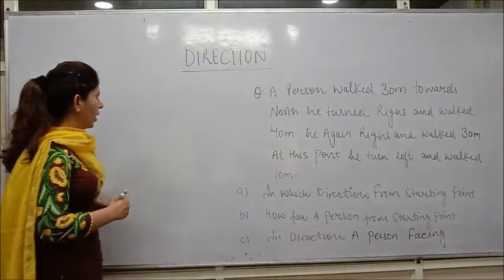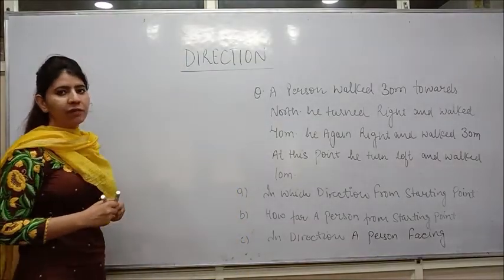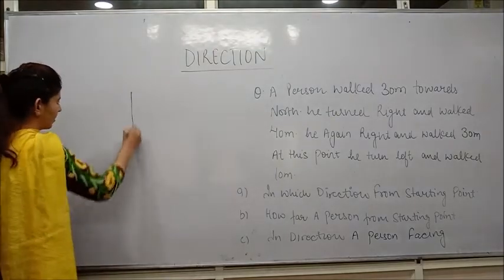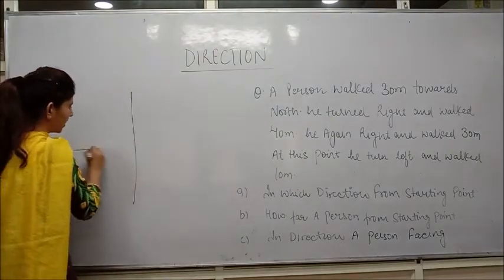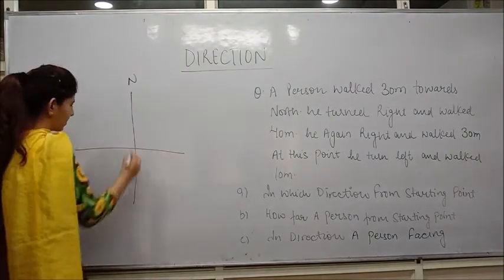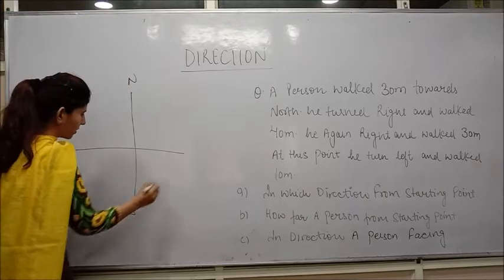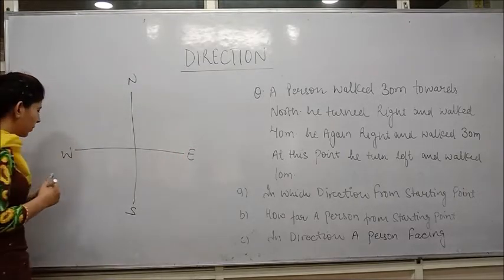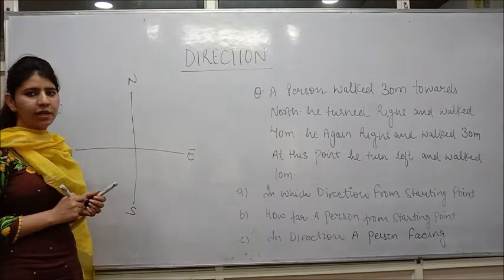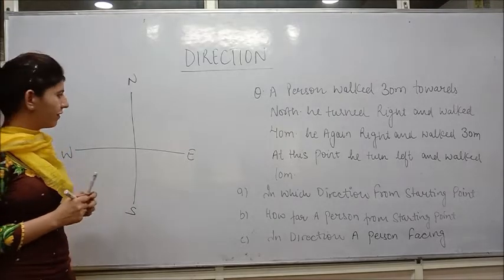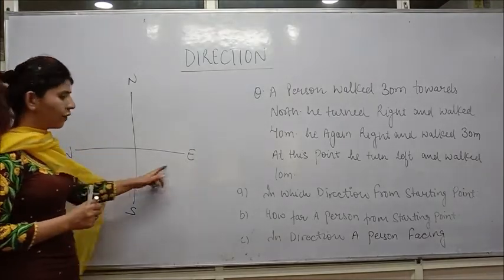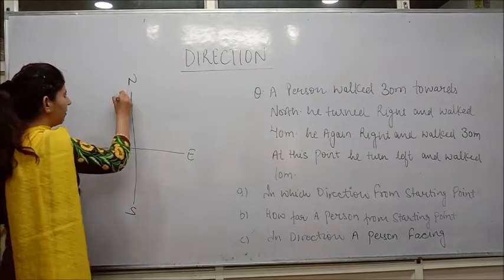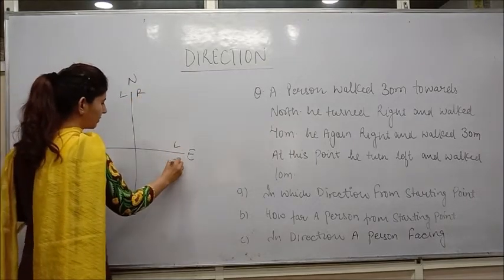As the topic is direction, we need to understand the four directions. There are basically four directions: north, south, east, and west. The most confusing part of directions is left and right. As we draw the four directions, we need to mark the left and right like this.